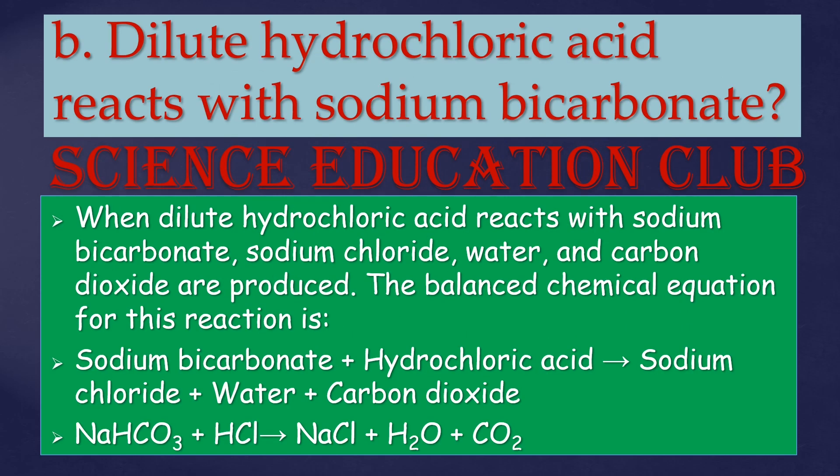What happens when dilute hydrochloric acid reacts with sodium bicarbonate? When dilute hydrochloric acid reacts with sodium bicarbonate, sodium chloride, water and carbon dioxide are produced. The balanced chemical equation is: NaHCO₃ + HCl → NaCl + H₂O + CO₂.